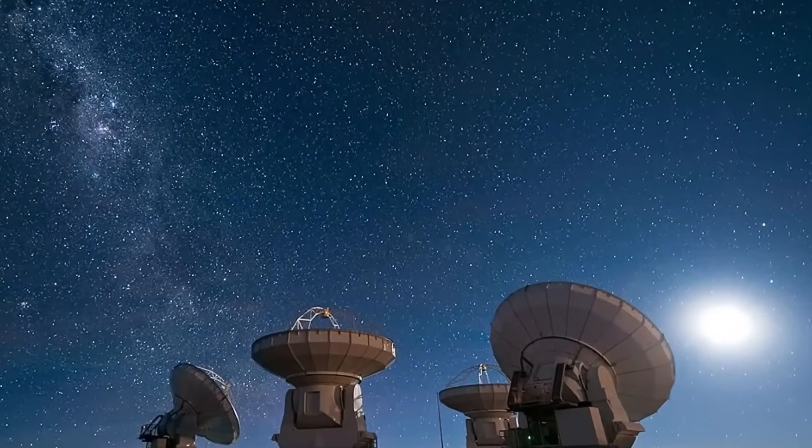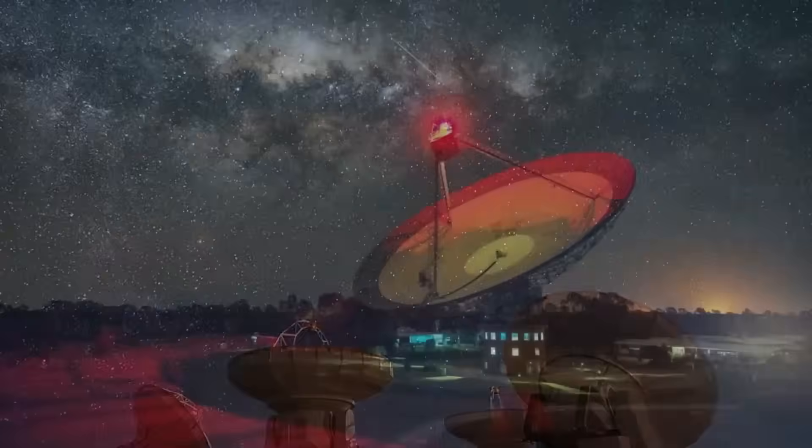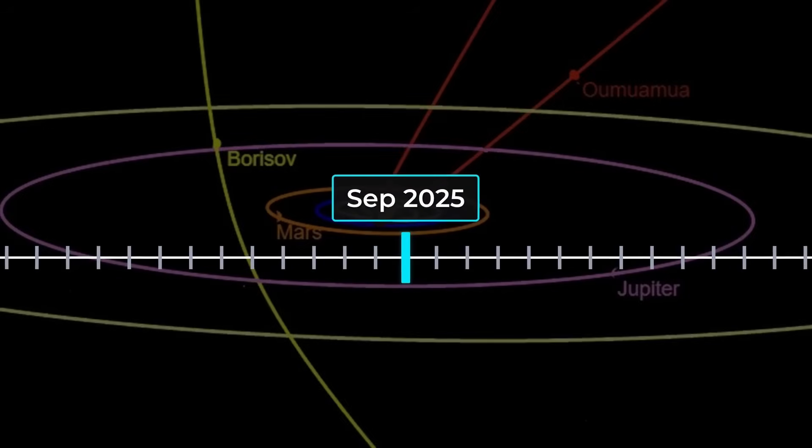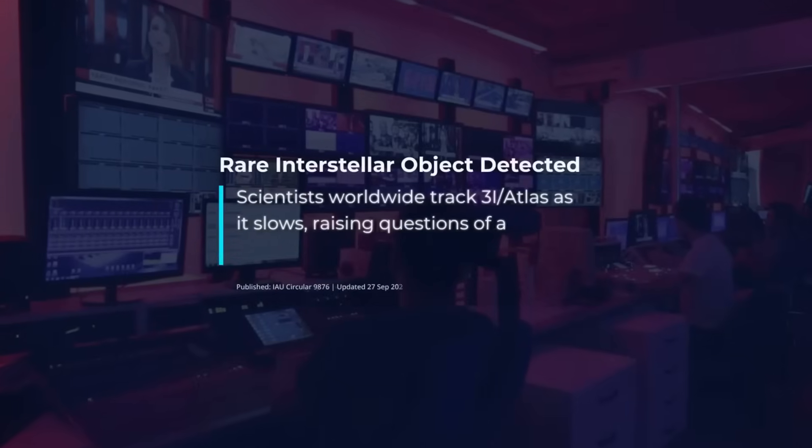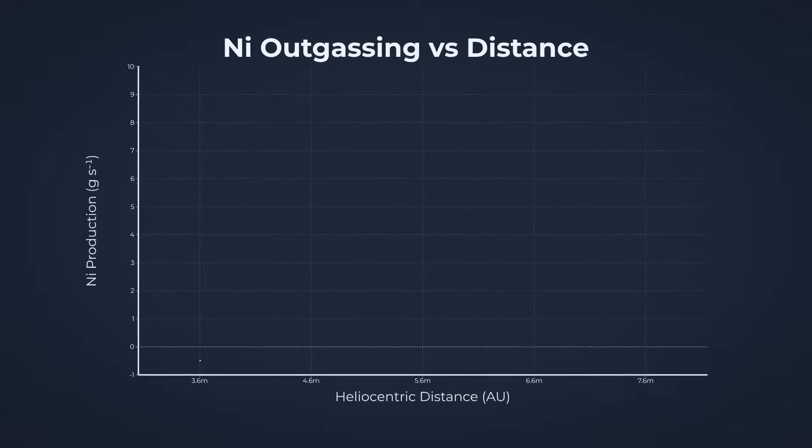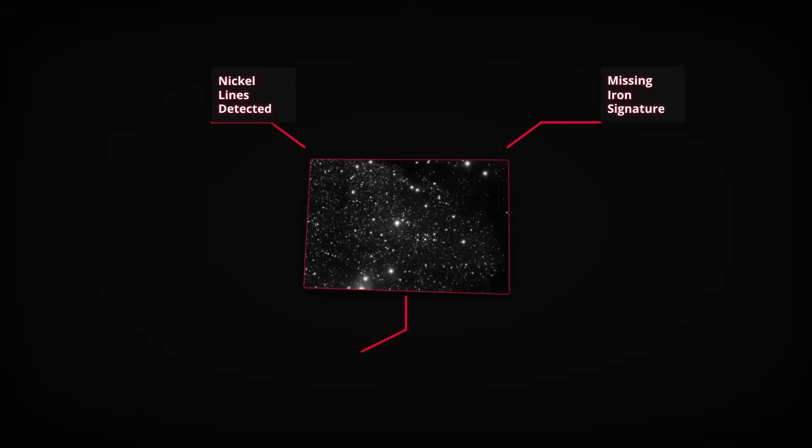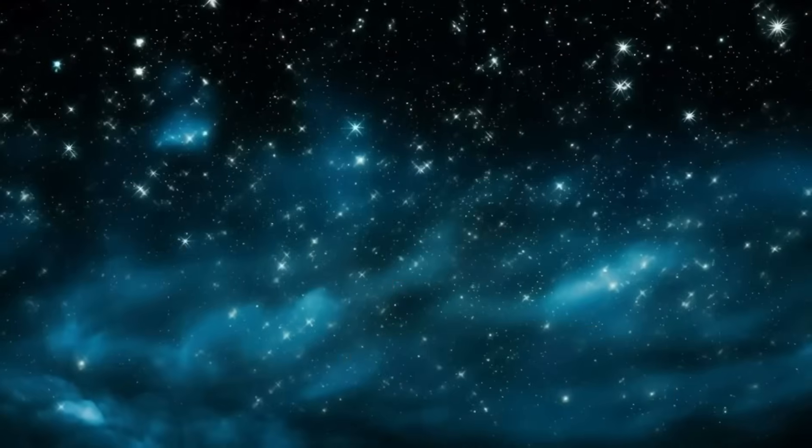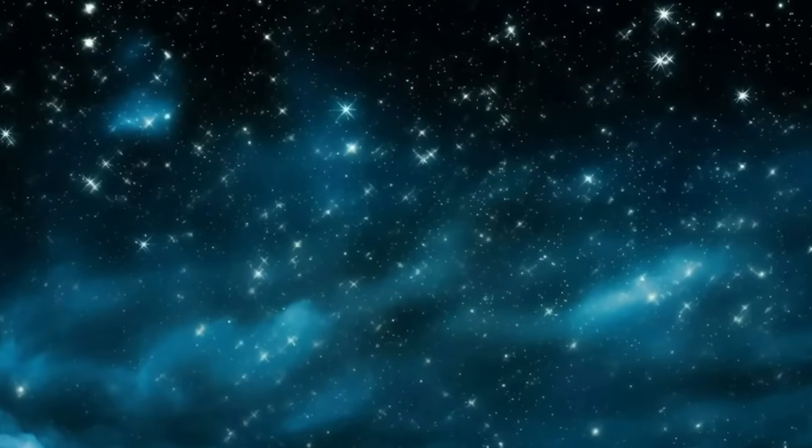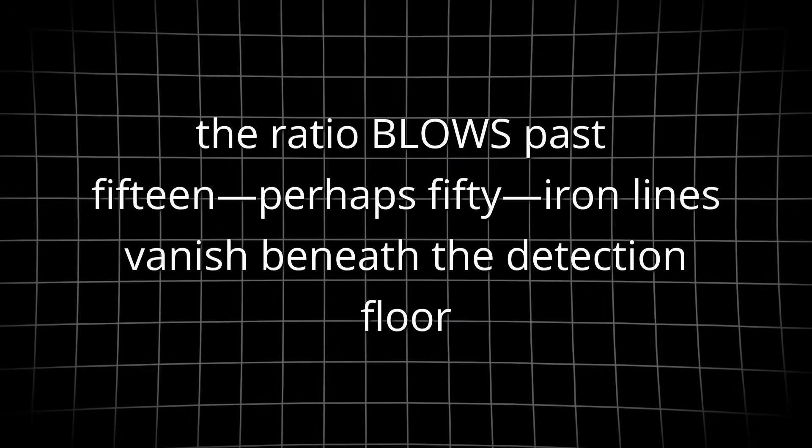The stakes are high. Every night counts as Atlas rounds the sun. A sudden flare, a spectral anomaly, or an unexpected motion could provide critical clues to its origin and nature. By pooling resources globally, humanity maximizes the chances of catching these fleeting signals. The story of Atlas is not just one of discovery. It's a demonstration of what coordinated, worldwide astronomy can achieve when the entire sky becomes a shared laboratory.